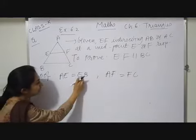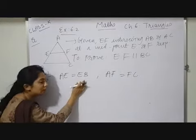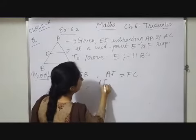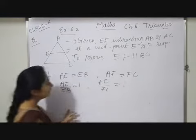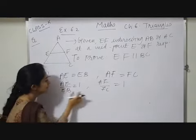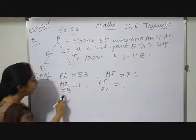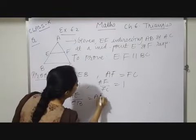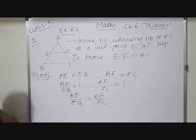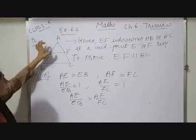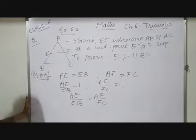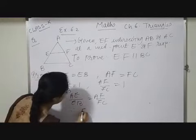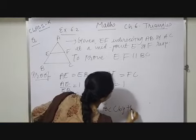Now, if I consider the ratios: AE upon EB equals 1, and AF upon FC equals 1. Both ratio values are equal to 1, so I can equate them: AE upon EB equals AF upon FC. Based on the converse of the Basic Proportionality Theorem, I can say EF parallel BC. Therefore, EF parallel BC — hence proved.